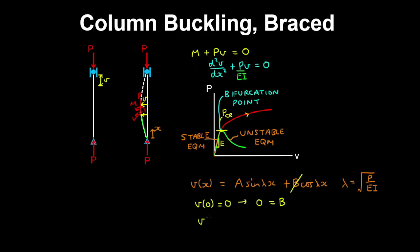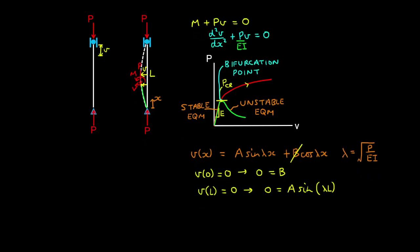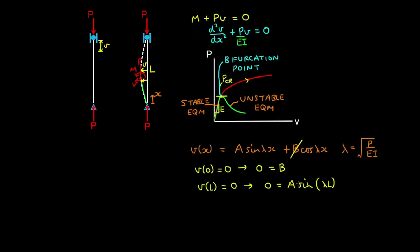The lateral deflection at the vertical roller at X equals L, being the length of the column, is also zero. So we have zero is equal to A sine lambda L.